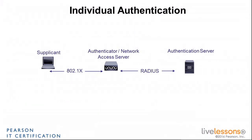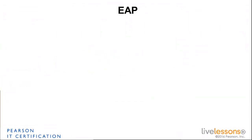This communication is going to be blocked and limited to the authentication server, until the server returns to the authenticator an access-accept: client is validated, you can unlock this client. At that time, the authenticator is going to release the control and let the client communicate through the authenticator. One particularity of 802.1x is that it does not describe how the authentication is done between the supplicant and the authentication server. It just describes this mechanism by which communication is blocked until the okay is received from the authentication server.